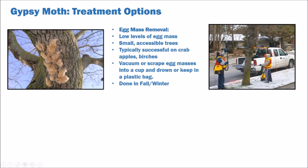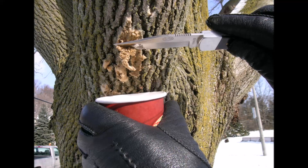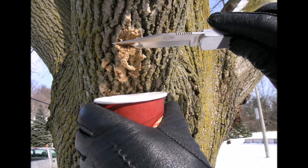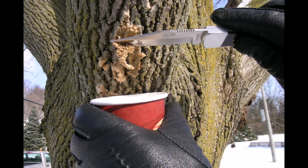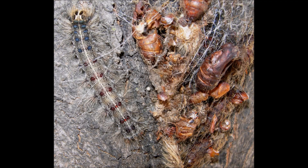A variety of treatment options are available for dealing with gypsy moth and should be considered by homeowners for their own properties. Egg mass removal done in the fall and winter is a good way to eliminate a bulk of potential caterpillars. Simply scrape off eggs, crush them, drown them, burn them, or scatter them to the wind. Keep in mind, putting the eggs in plastic bags and leaving them in your garage may lead to a caterpillar hatch in the spring, which may not be pleasant.